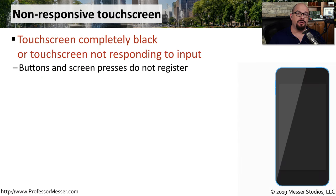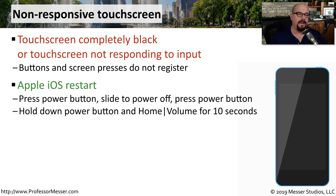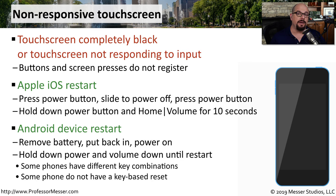A problematic application could cause your system to freeze up so that the screen never turns on. You pick up your phone, touch the screen, and it doesn't seem to respond, remaining black. You can try a soft reset by holding down the power button and sliding to power off, then powering back on. But if it's completely frozen, you may have to perform a hard reset by holding down the power button and the home button, or holding down the power button and the volume button for 10 seconds. Many Android devices allow you to remove the battery and replace it to power back on. Some phones have different key combinations to perform a reset, and some phones do not have a way to press keys to perform a reset.